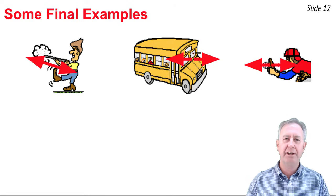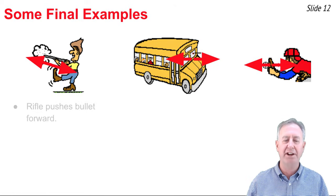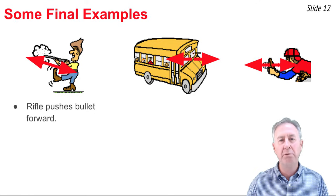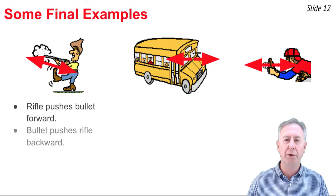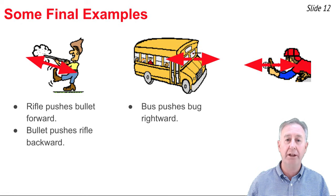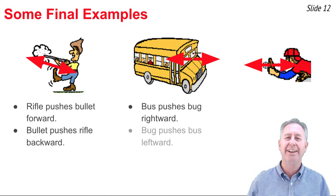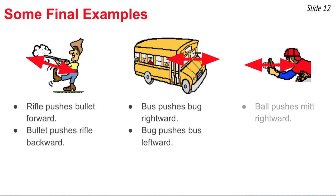To finish up, here are a few final examples. In the first, a bullet is fired by a rifle — the rifle pushes the bullet forward and the bullet pushes the rifle backwards. In the middle example, a bug hits a bus — the bus pushes the bug rightward and the bug pushes the bus leftward. Finally, a ball is caught by a catcher's mitt — the catcher's mitt pushes the ball leftward and the ball pushes the mitt rightward.